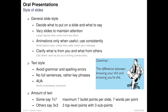Different guidelines can be followed regarding text amount. There is the 7x7 rule: a maximum of 7 bullet points per slide with at most 7 words per point. Alternatively, the 3x3 rule: a maximum of 3 top-level bullets and 3 sub-points each.